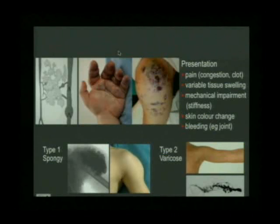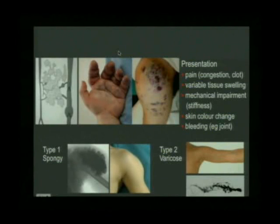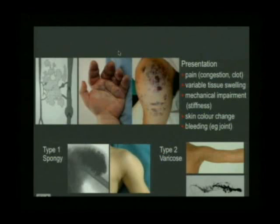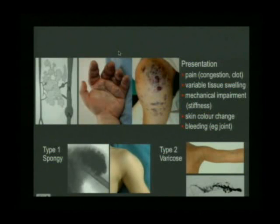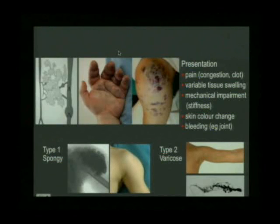Venous malformations can be divided into two types. Type 1 is the spongy venous malformation - seen here underlying the skin of this boy's shoulder. A needle has been put through the skin, contrast injected, and you can see this lobulated spongy appearance. Type 2 is the more varicose type of venous malformation, where the venous channel is outlined by a needle through the skin. The veins are very abnormal - very dysplastic, with areas of narrowing and ectasia. They are not normal functioning channels.